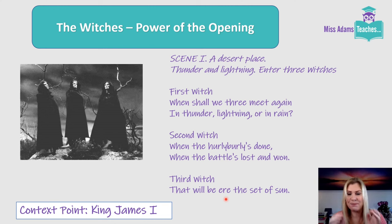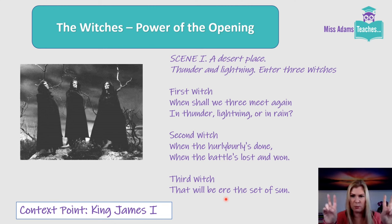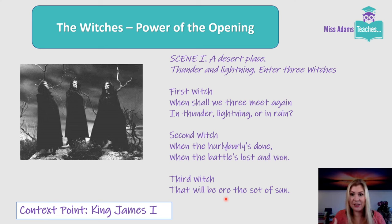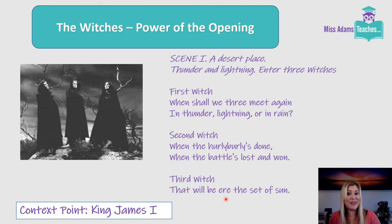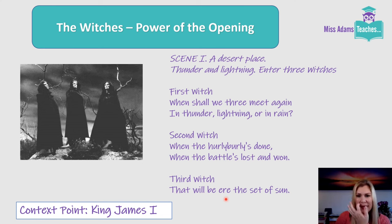So Macbeth, by introducing the witches at this point — introducing these villains — Shakespeare is playing to King James and what he would have wanted to see. Later in the play, for example, he talks about them cursing a ship as an act of petty vengeance, which is exactly what King James thought they did to him. They cursed his ship and tried to kill him. So Shakespeare is being quite clever here.